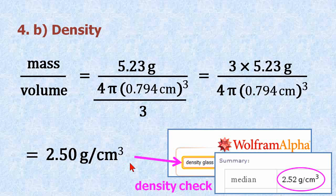To check my answer, I go back to Wolfram Alpha. I type in density glass, which is our check, and it says in the summary that the median density is 2.52 grams per centimeter cube. So I'm approximately right.